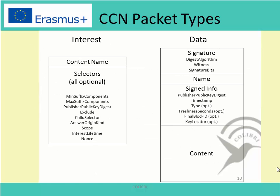There are only two packet types in CCN: the interest and the data. Users express their demands for content by sending out interests on the outgoing interfaces. The interest contains the name of the desired content, and additionally it is combined with selection information such as the scope within the network where the data should come from, or certain filter information.